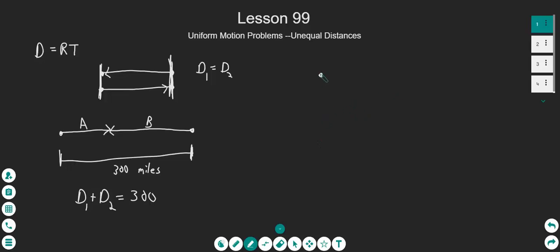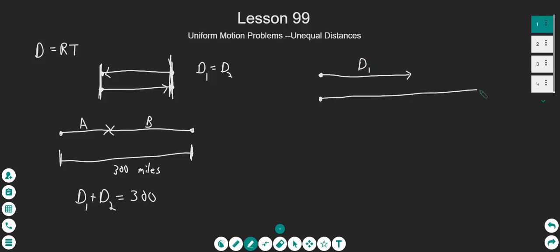In the third scenario, we have a beginning point, distance one goes from here to here — we'll call it distance sub one. And then we've also got a distance sub two for the second party. Only this one is not going to be equal to the first one. Maybe it's longer than the first one.